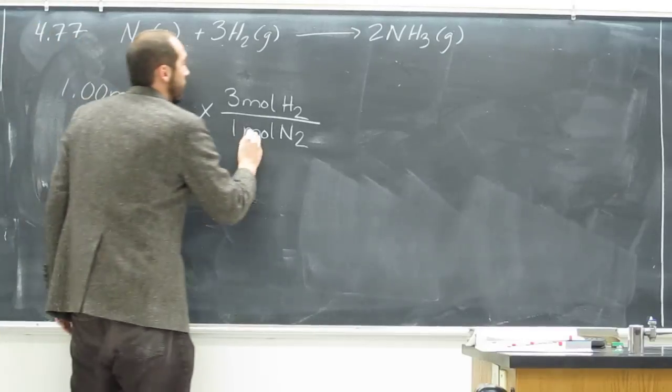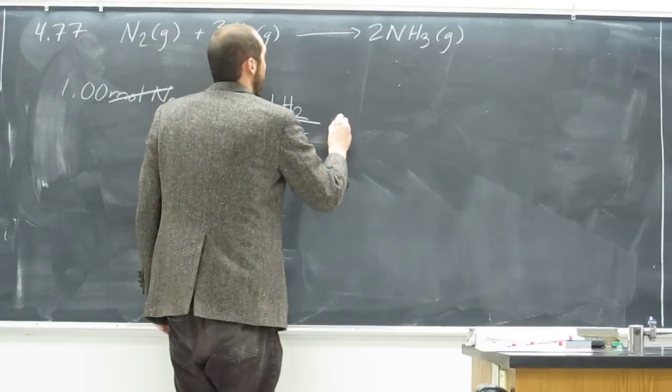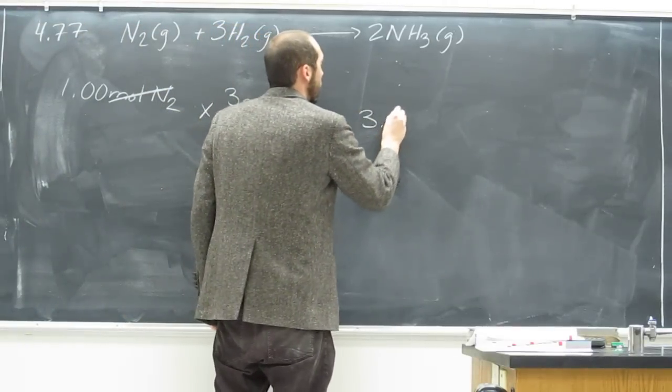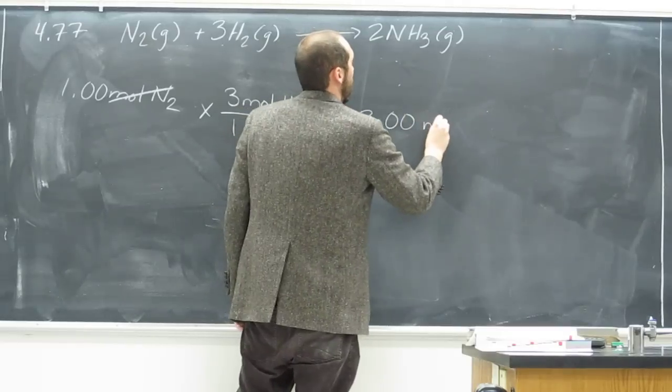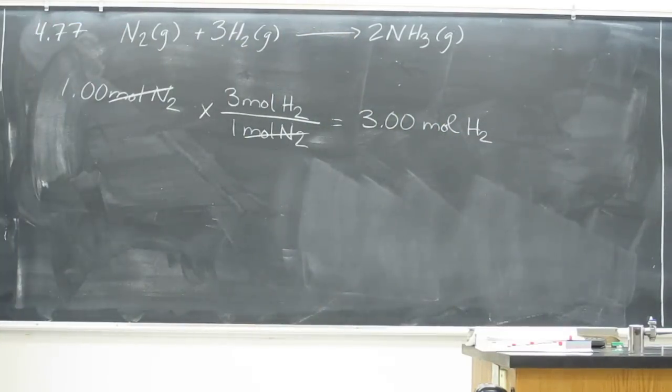Of course, moles of nitrogen then cancel out, and if we multiply across, we get 3.00 moles of hydrogen. Like that.